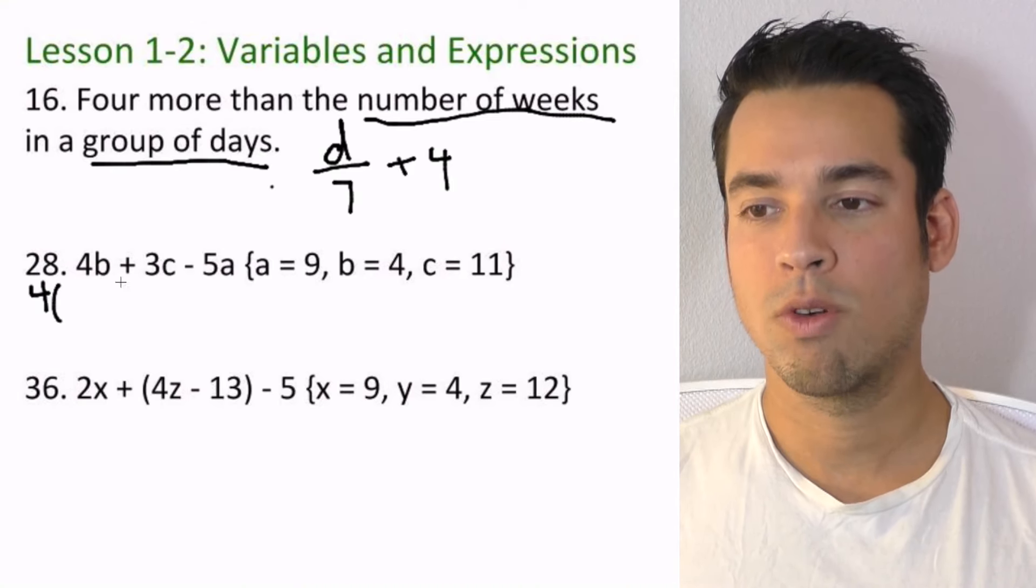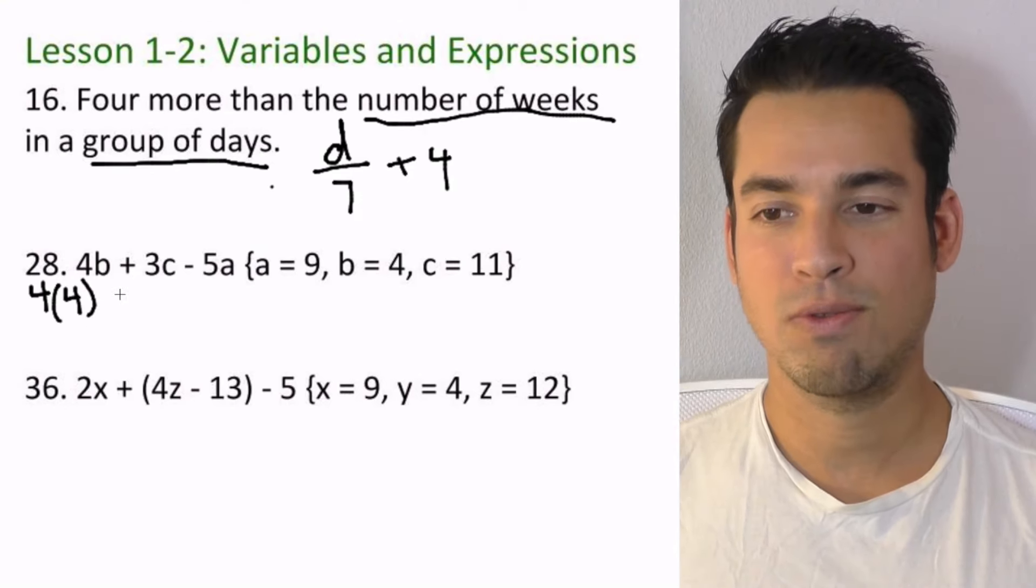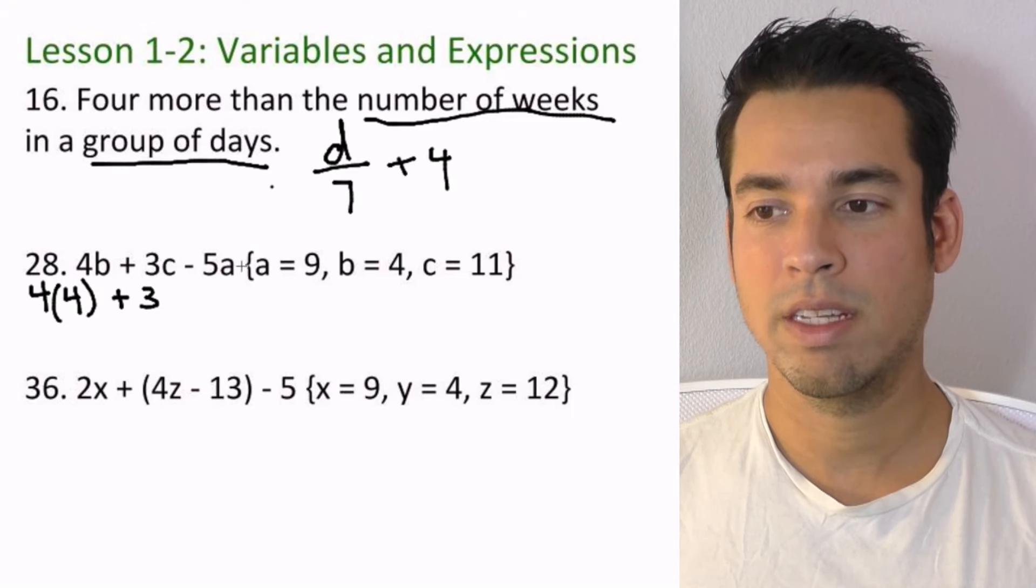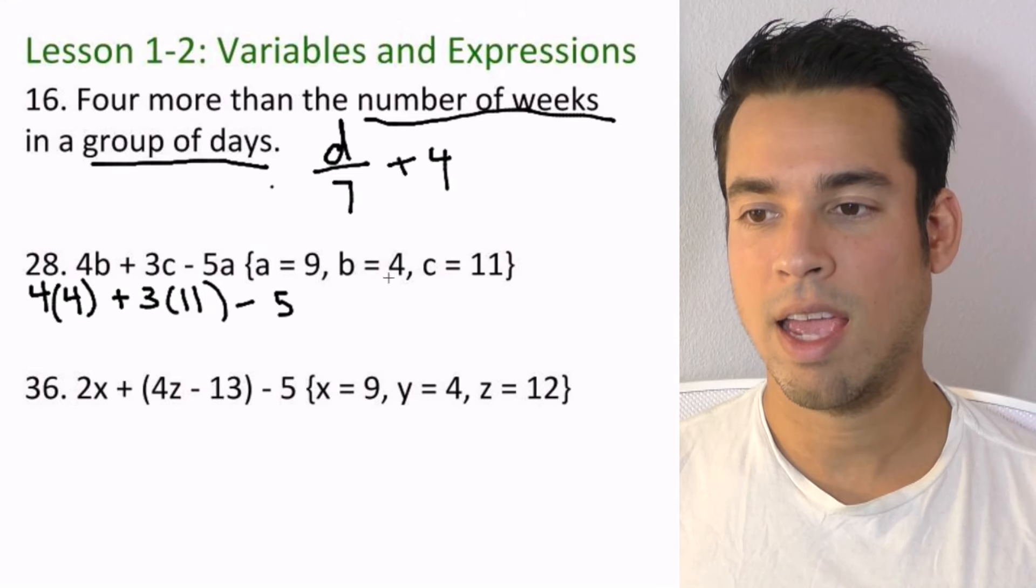So I'm going to just do a little swap. We got four—this isn't like four, four, right? It's actually four times four because that's representing four times b. So four times four plus three times c, is 11, so we plug an 11 here, minus five times a, which is right here, is nine.